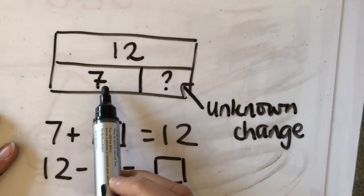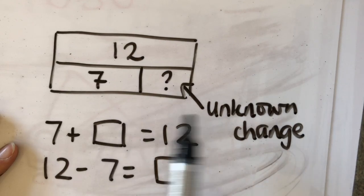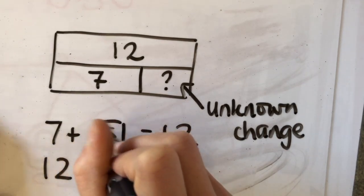So I've got 7, I'm doing something to it and my end result is 12. So the change that's happening is this number here. Obviously, we know that number is 5.